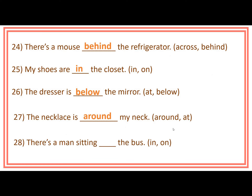Number 28 — last item: There is a man sitting ___ the bus. Prepositions inside the bracket are in and on. Answer: There is a man sitting on the bus.